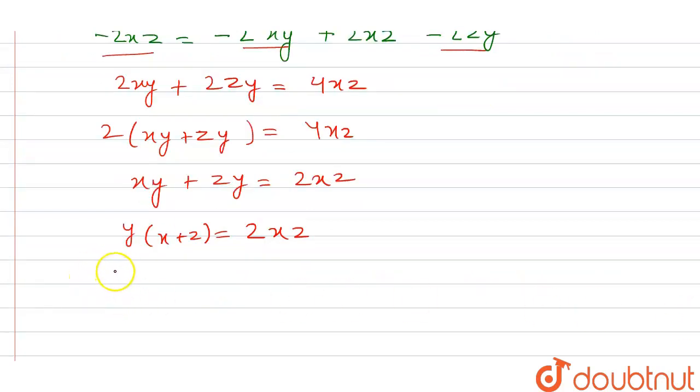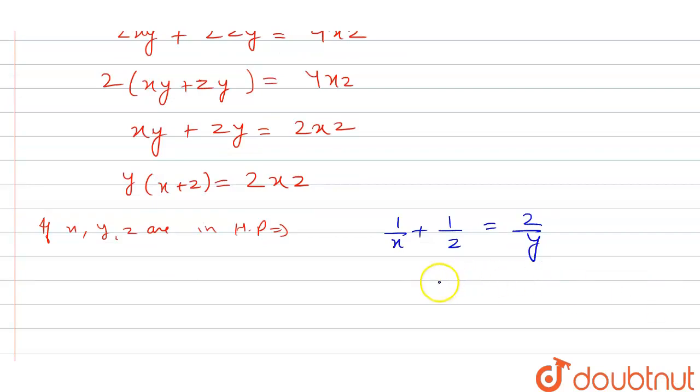Therefore, we know that if x, y, z are in HP, so it is equal to 1 by x plus 1 by z is equal to 2 by y. So by taking LHS we will get x plus z into y is equal to 2 into xz.